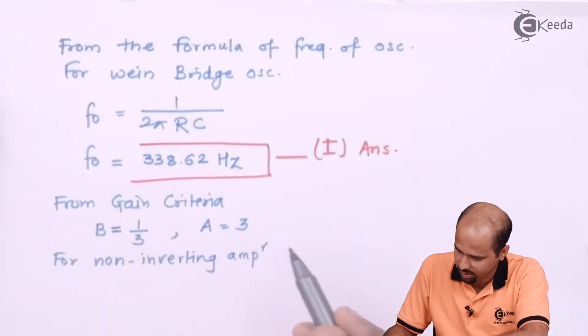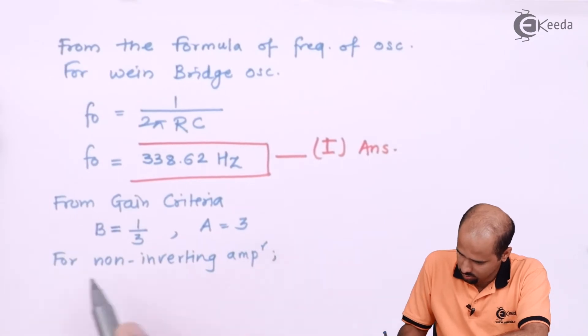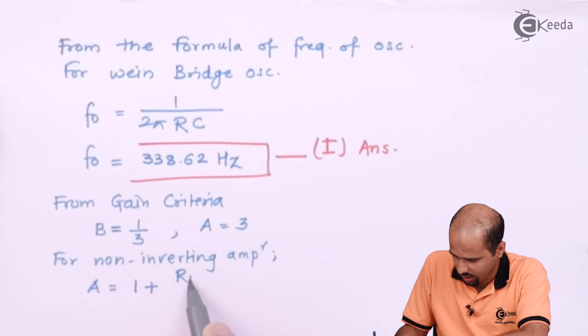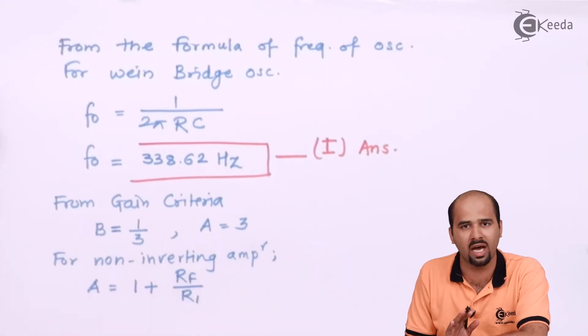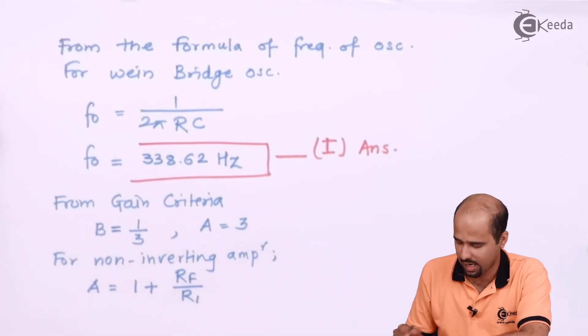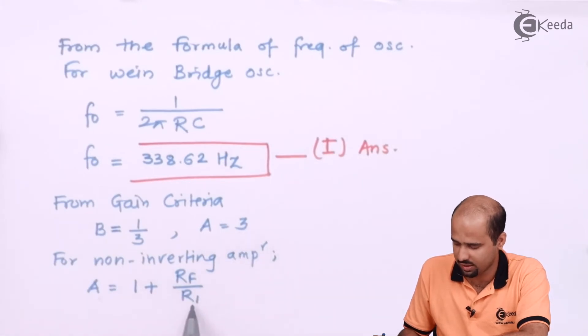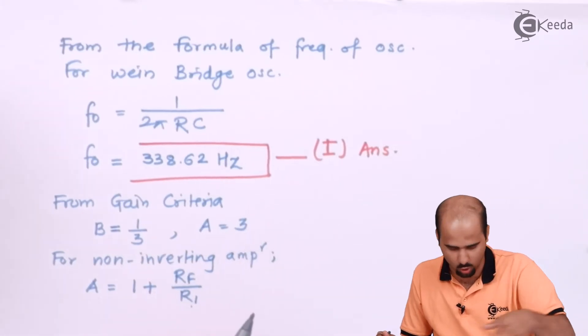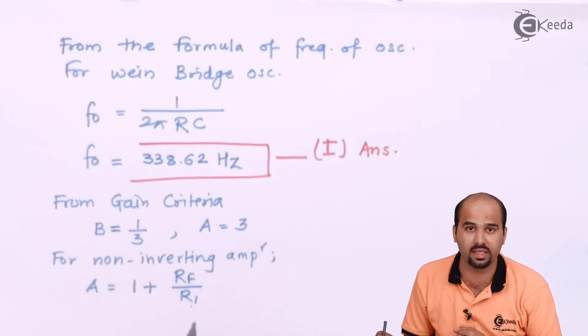So for non-inverting amplifier, A is equal to 1 plus RF upon R1. Only RF is unknown to you. A is nothing but 3, R1 is nothing but the value of R1 is given as 10 kilo ohm.